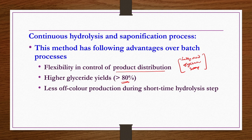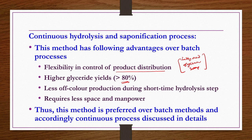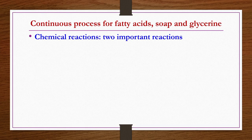Less color or half-color production during the short-time hydrolysis step is another advantage, as is requiring less space and manpower since it is a continuous process. Thus this method is preferred over batch methods, and accordingly we are going to discuss this continuous process for fatty acids production, soap production, and glycerin production. Now we see the chemical reactions, raw materials, quantitative requirements, flow chart, and process description.